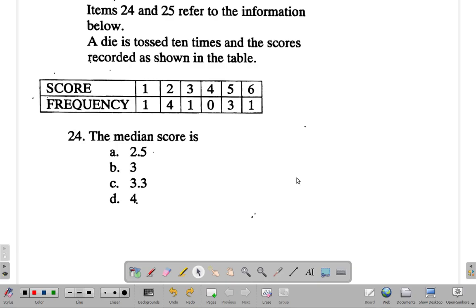Items 24 and 25 refer to the information below. A die is tossed 10 times and scores recorded as shown in the table. You must find the median score, so pause the video and try it. Take a minute and come back. All right, you want the median score - these are the scores, these are the frequencies.